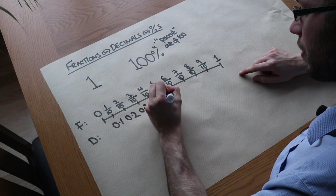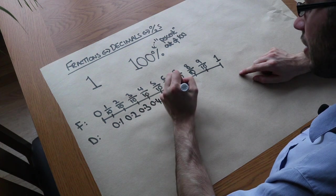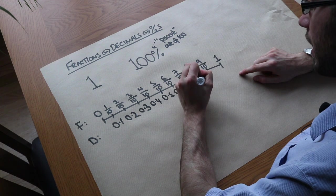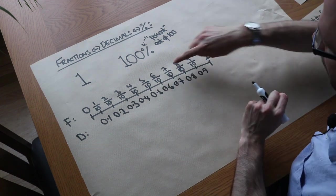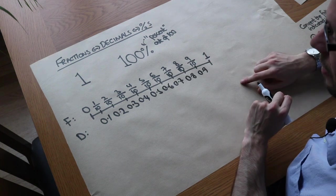0.4, 0.5, 0.6, 0.7, 0.8, 0.9, and then you've got a whole. So therefore 7 tenths is the same as 0.7.